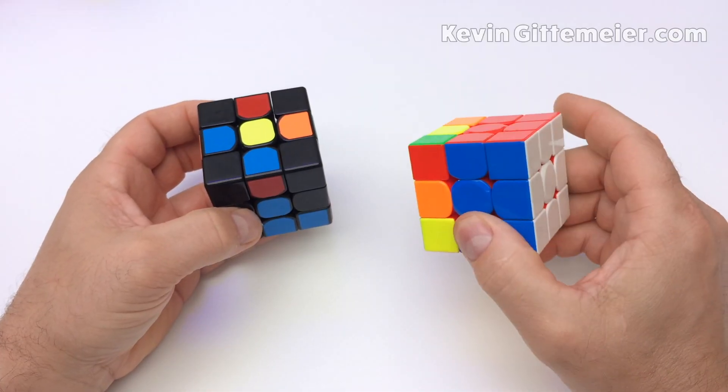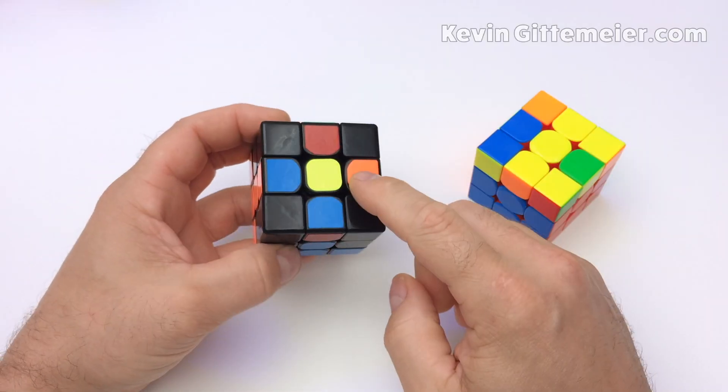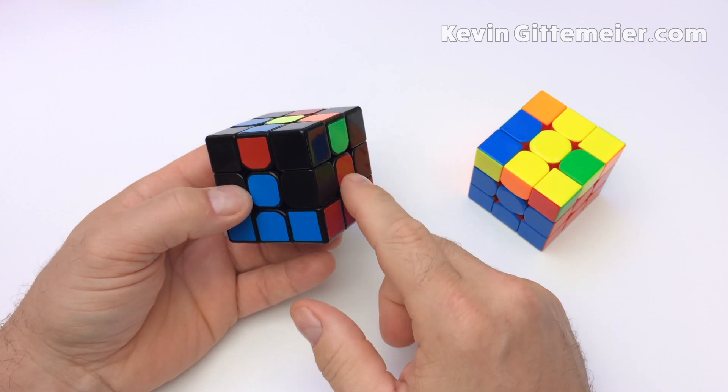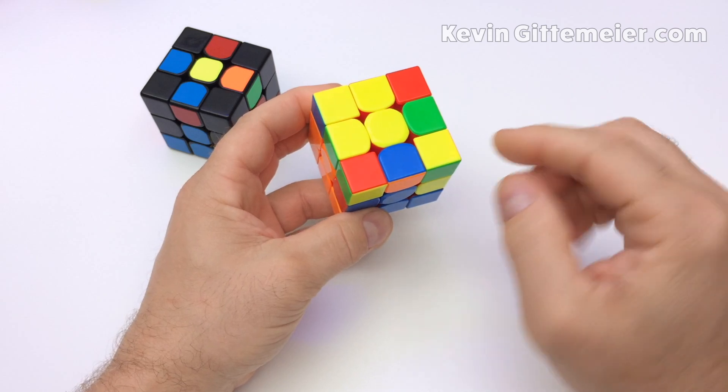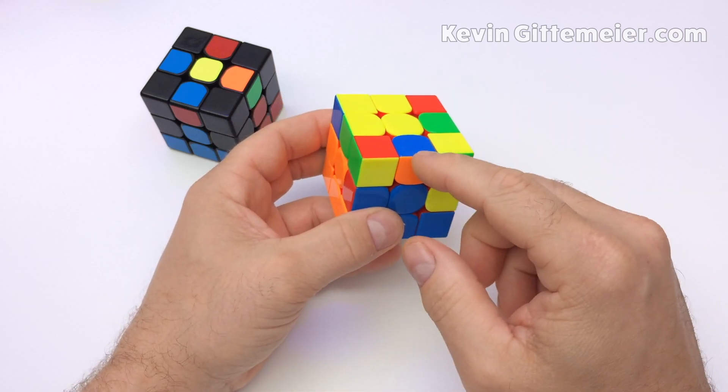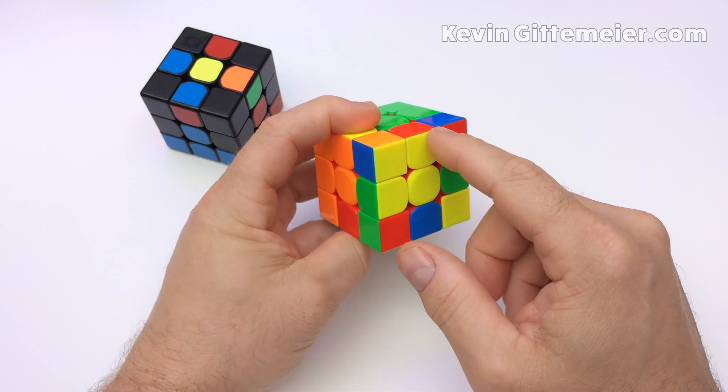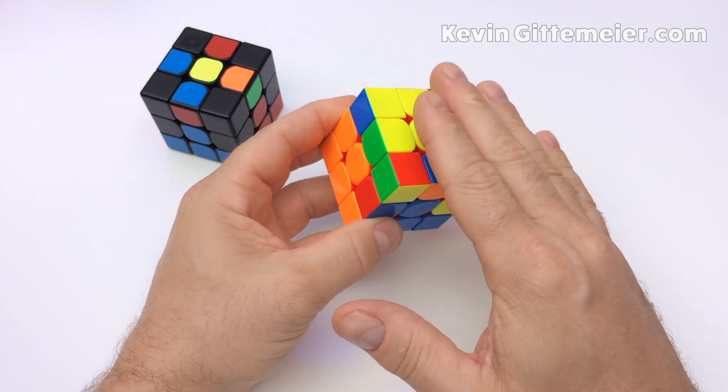In order to solve the second layer, we need to locate and place the four edge pieces relative to their corresponding centers. First, we look on the top layer for an edge piece with no yellows. Yellow is a top layer color, so no middle layer edge can have a yellow.